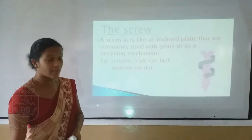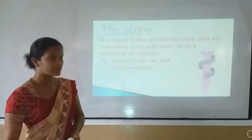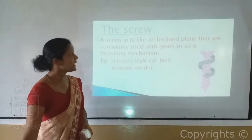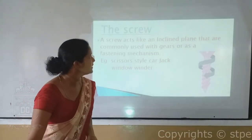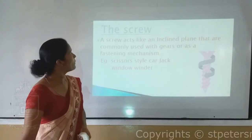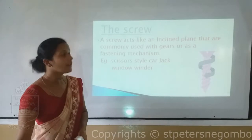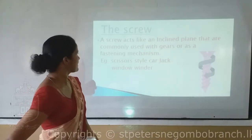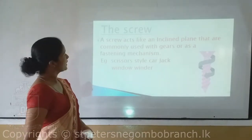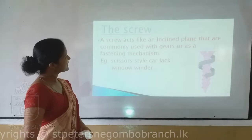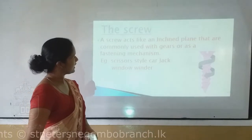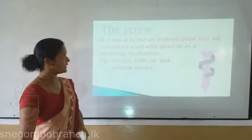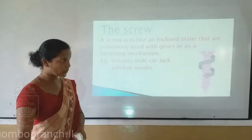The other one is the screw. A screw acts like an inclined plane and is commonly used with a gear or as a fastening mechanism. For example, this is a car jack and the window winder — it is a screw.